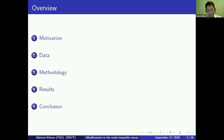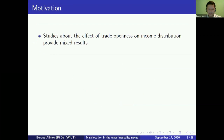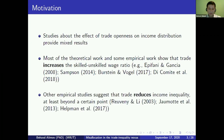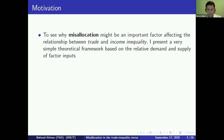I will briefly speak about motivation, theoretical motivation, then data and methodology, results, and conclude. Research about the effect of trade openness on income distribution provides quite mixed results. Most theoretical and some empirical studies show that trade openness increases the skilled-unskilled wage ratio or wage inequality, but other empirical studies suggest that trade openness may even reduce income inequality, at least beyond a certain point.